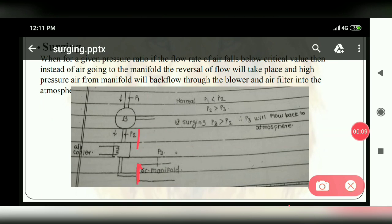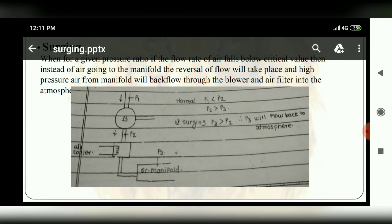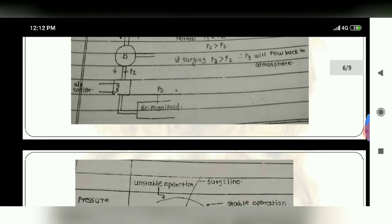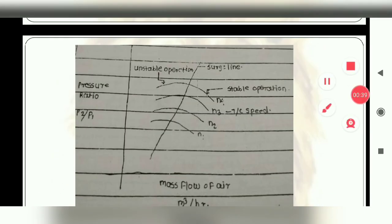So if the air is coming from here, it is collecting air only. So the pressure is increasing. Now the air is coming here and the pressure is increasing. One point is that P3 will increase to P2, and then the reverse flow will take place.